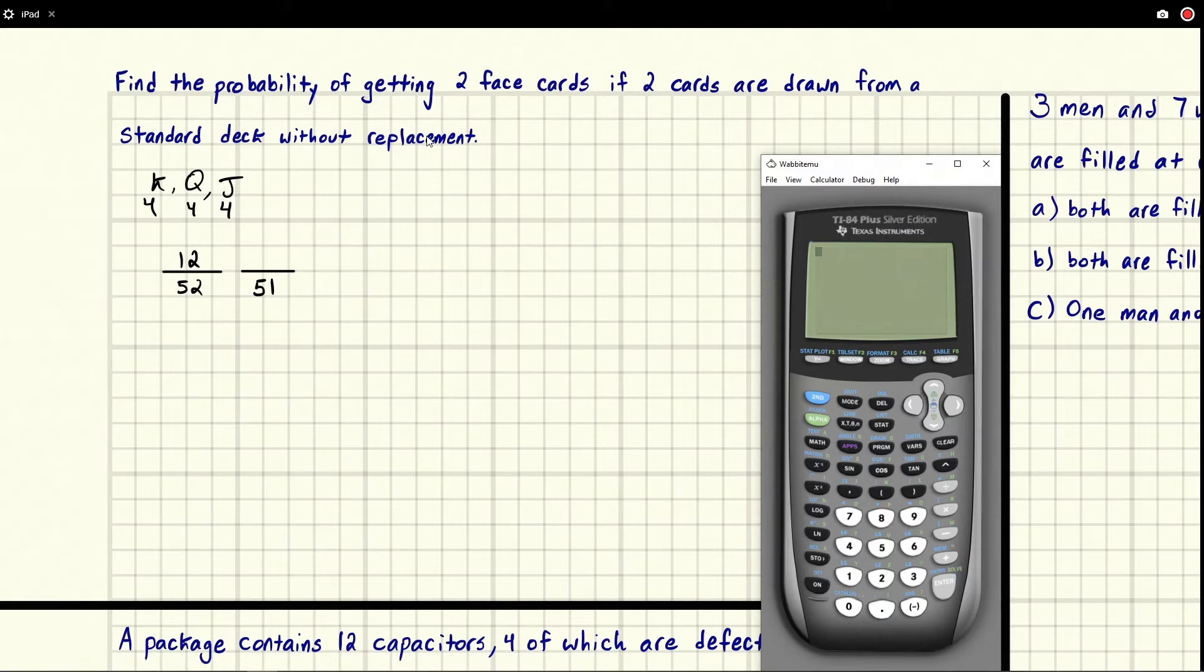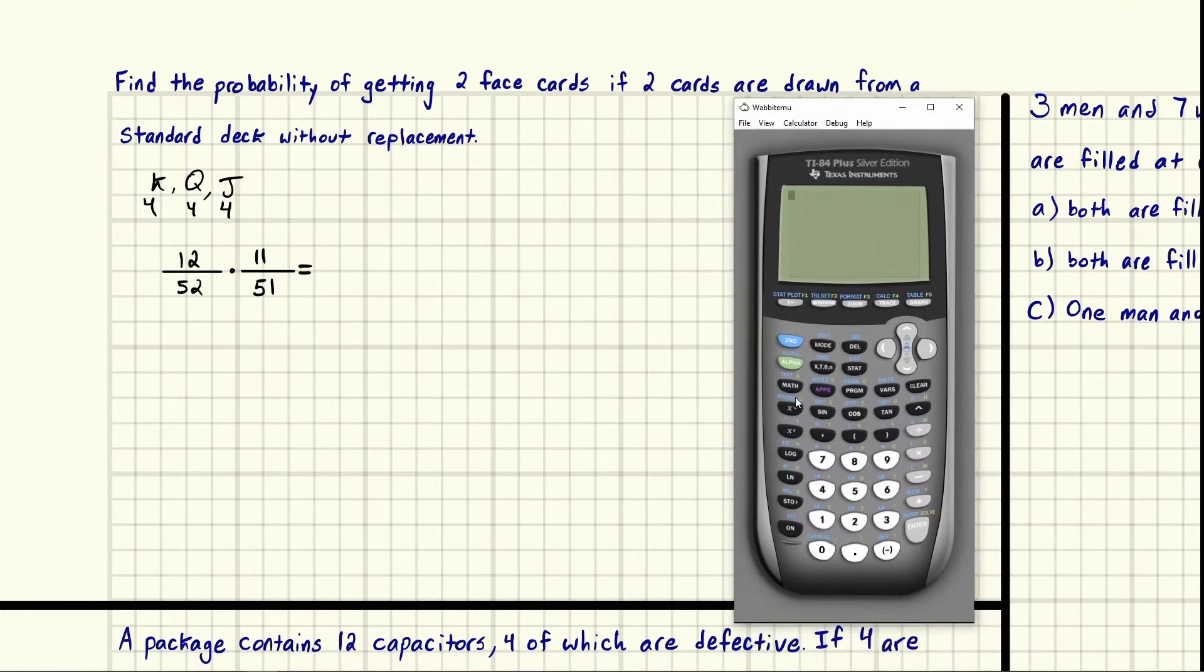We multiply this and we get our answer. So we're simply going to do 12 times 11, and we're going to divide that number by 52 times 51. Do not forget your parentheses, easy mistake to make.